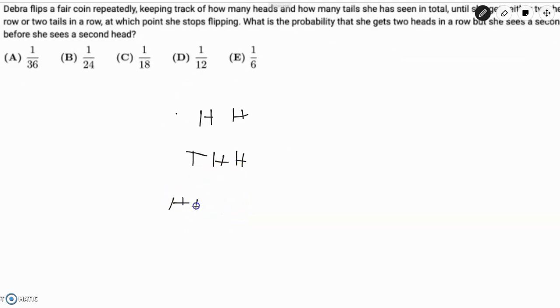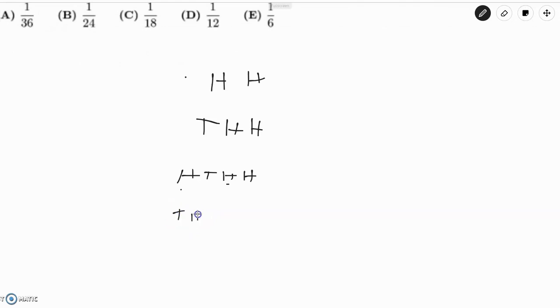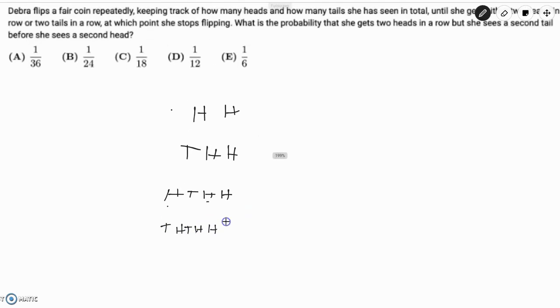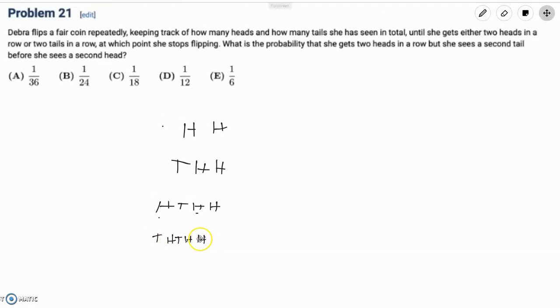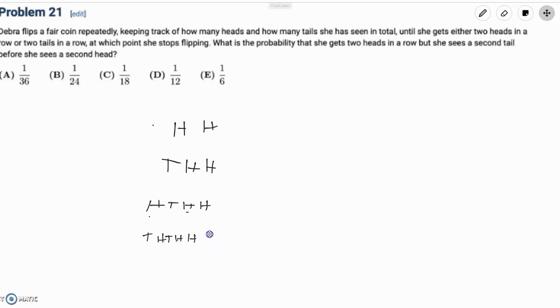If we go HTHH, this won't work, because you see the second head before you see the second tail. But if you go THTHHH in five rolls, then you see two tails before you see two heads, and you roll two heads consecutively before two tails, which is what she wants.